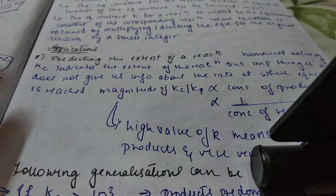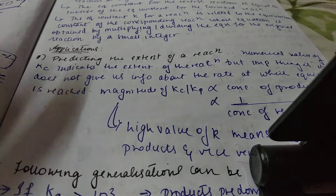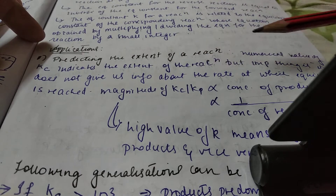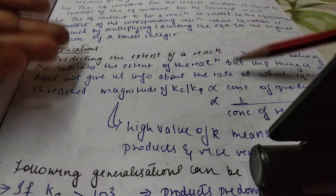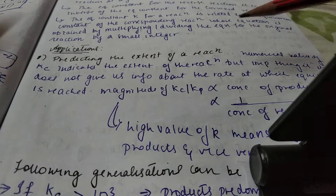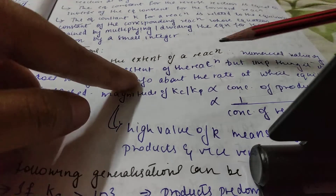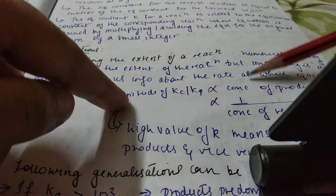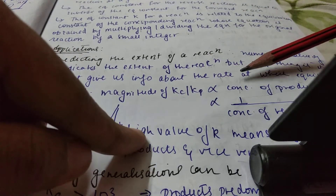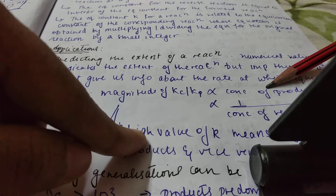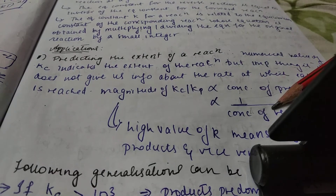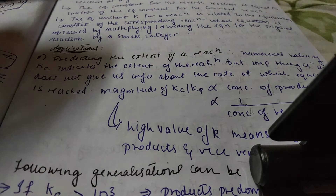Now, applications of the equilibrium constant — predicting the extent of a reaction. The numerical value of Kc indicates the extent of the reaction, but importantly, it does not give us information about the rate at which equilibrium is reached. The magnitude of Kc is directly proportional to the concentration of products and inversely proportional to the concentration of reactants, as is clear from the equilibrium constant expression.